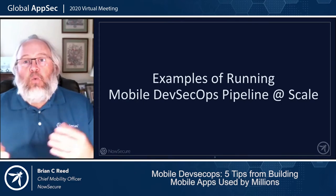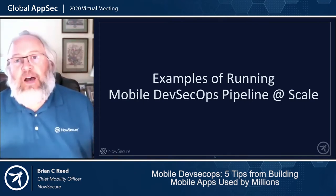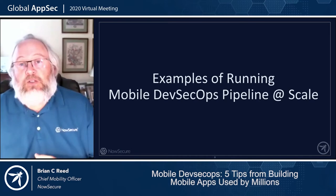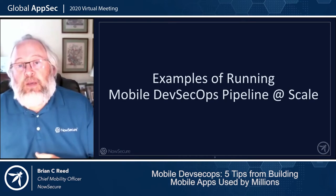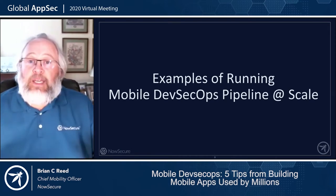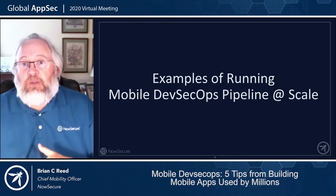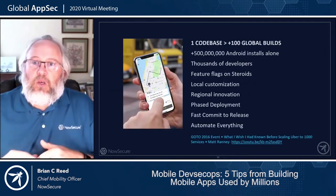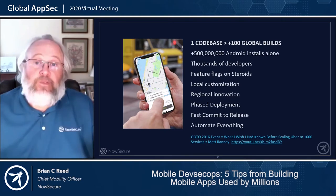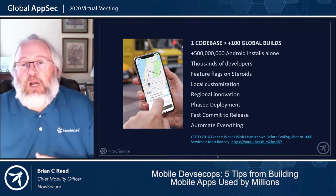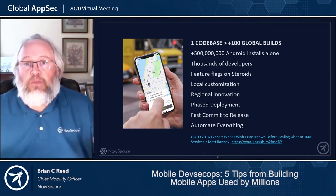I'd like to talk about five really interesting case studies from mega organizations doing amazing things when it comes to mobile. Some I can name, some will remain nameless. The first one is Uber. I'd be willing to bet everybody watching this has used Uber or Lyft or one of the ride-sharing apps — they're a great example of mobile first.